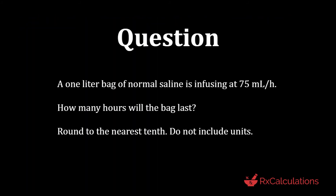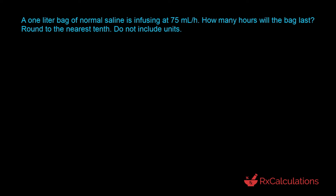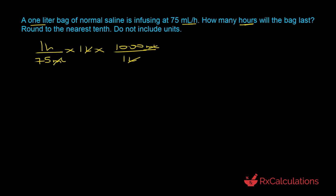This question says: A one-liter bag of normal saline is infusing at 75 milliliters per hour. How many hours would the bag last? Round to the nearest tenth. Do not include units. The goal is to determine the duration of infusion in hours. Using dimensional analysis, since we are looking for time in hours, we start with the flow rate of 75 milliliters per hour and multiply by the volume of one liter, which is 1000 milliliters. The liters and milliliters cancel out, leaving hours: 1 hour × 1000 ÷ 75 = 13.3 hours.